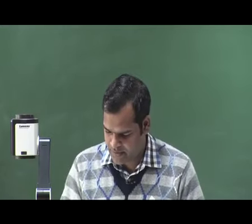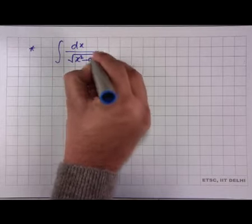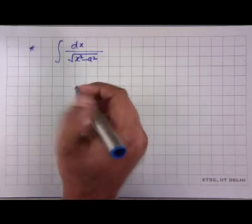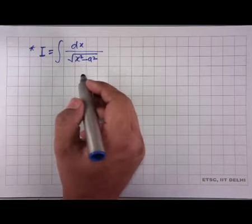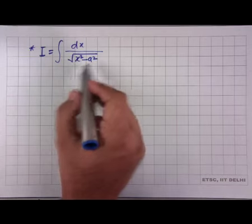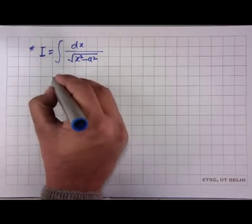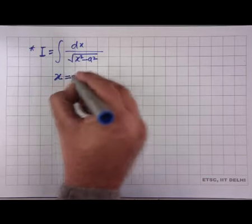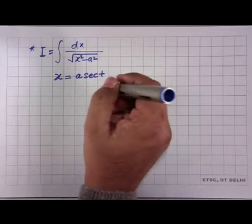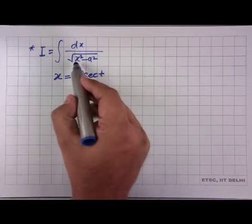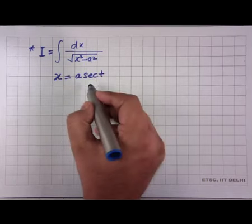Further, we look at ∫dx/√(x²−a²), which is different from the previous case. The earlier substitution will not work here. Notice the relationship between sec and tan: if we put x = a·sec(t), then x²−a² = a²sec²(t)−a² = a²(sec²(t)−1) = a²tan²(t), which can be converted using the sec²−1 = tan² identity.